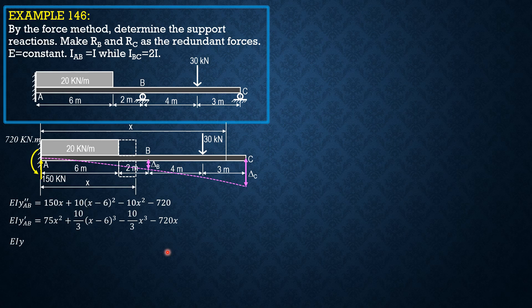Integrating again, EI y AB equals 25x cubed plus 5/6 (x minus 6) to the fourth minus 5/6 x to the fourth minus 360x squared. So we can now compute delta B when x is 8.